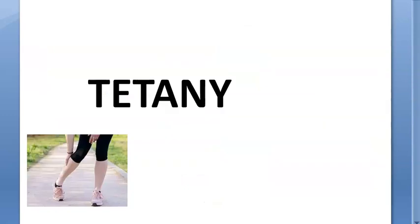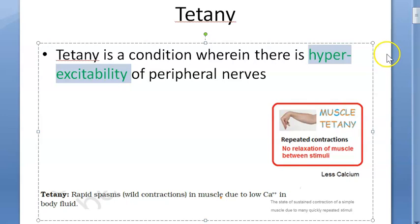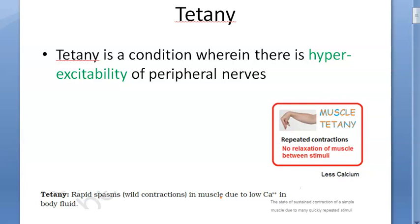In this video we want to look at tetany. The textbook definition is that there is hyperexcitability of peripheral nerves. Let's draw a nerve — a peripheral nerve supplying to some muscle.